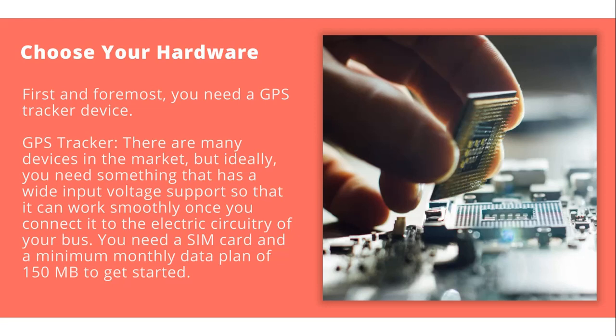Step 2: Choose your hardware. First and foremost, you need a GPS tracker device. There are many devices in the market, but ideally you need something that has a wide input voltage support so that it can work smoothly once you connect it to the electric circuitry of your bus. You need a SIM card and a minimum monthly data plan of 150 MB to get started. Nowadays, GPS devices for school buses come with a host of features such as real-time tracking, speed monitor, SOS button, shock sensor, vibration alarm, accident detection, voice surveillance, ignition cutoff, etc.